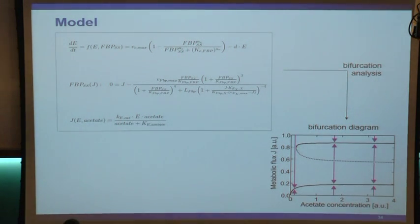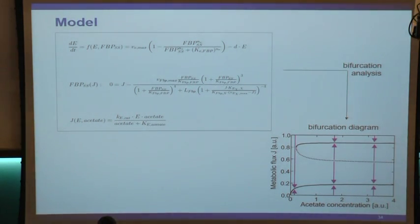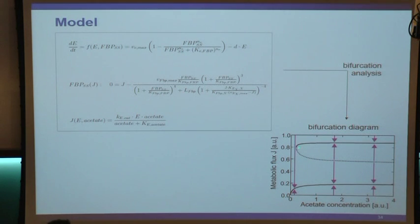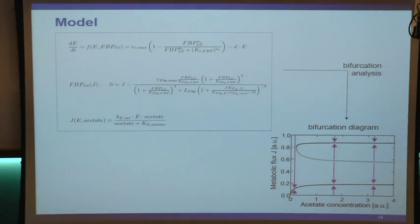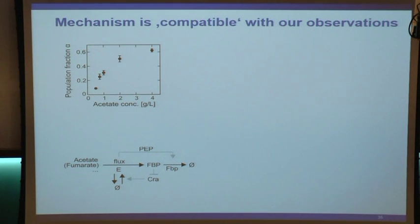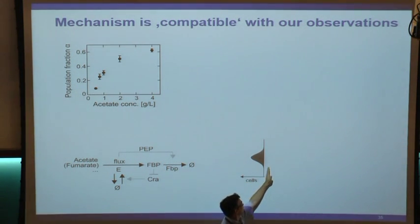Taking this model and comparing it to our experimental data: if we assume a histogram of cells with the metabolic flux as the axis, there are some cells that can only generate a low flux when confronted with the environmental change, attracted to the low stable state, and others that generate high flux, attracted to the high state - which is very consistent with the experimental observations of two distinct growth phenotypes.